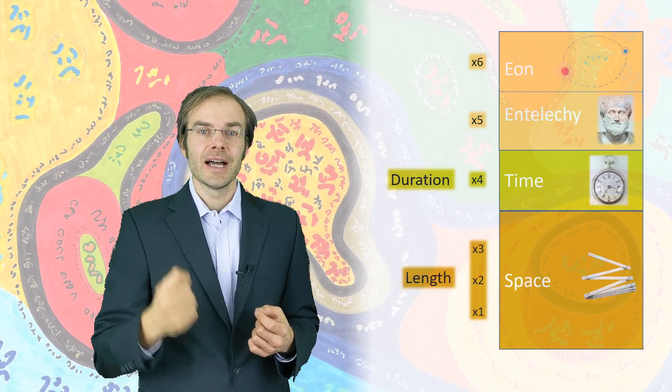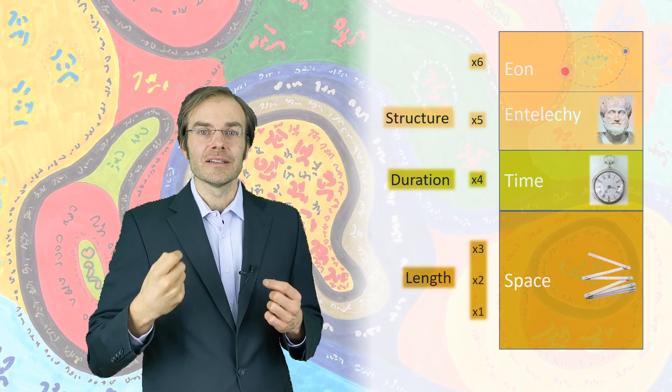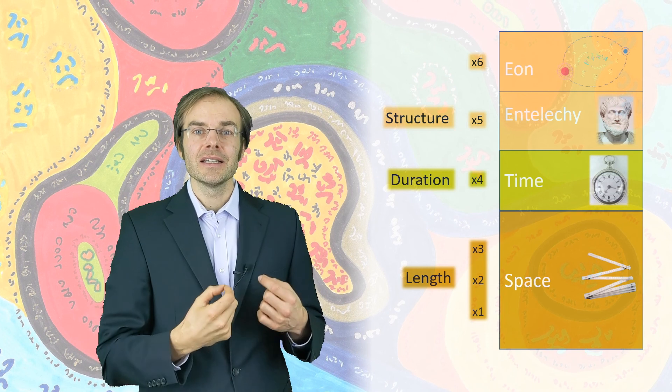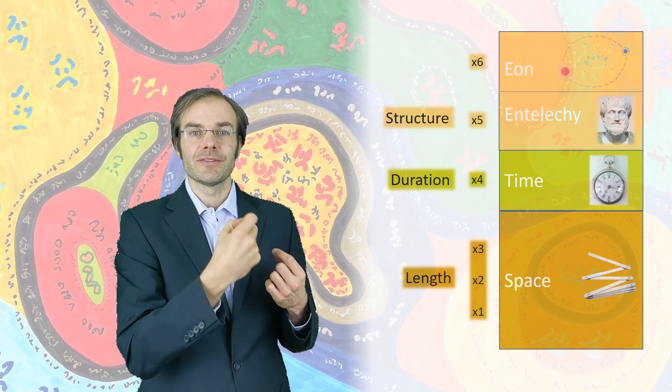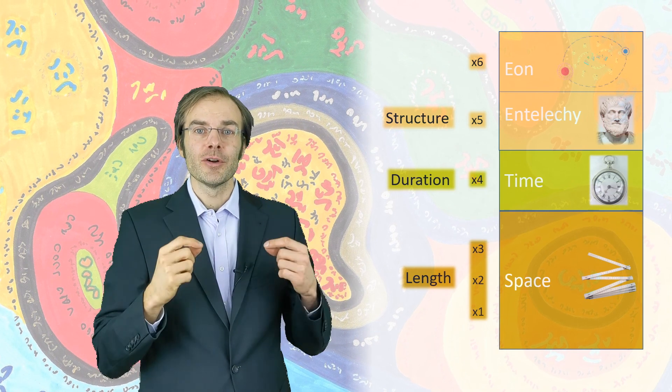Dimension five, Heim interprets as a structural coordinate. That means the higher organized the system is, the higher its coordinate in the terms of x5. You can also call organization an inverse to entropy.